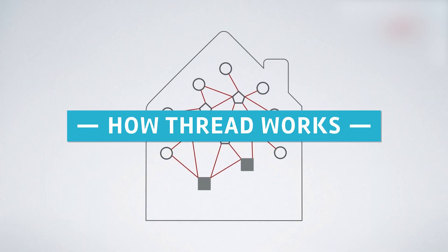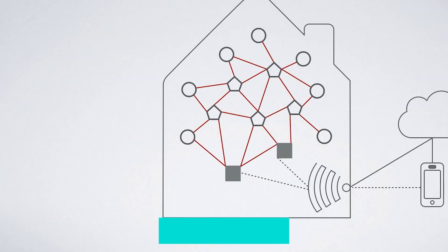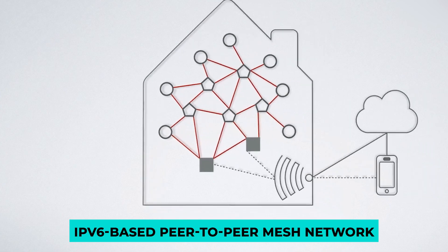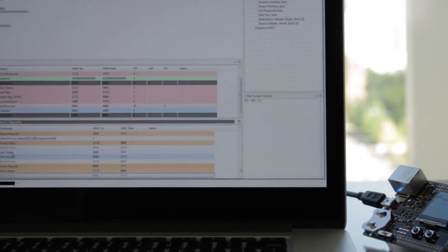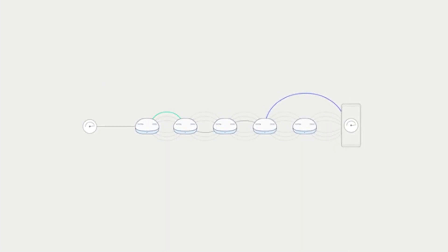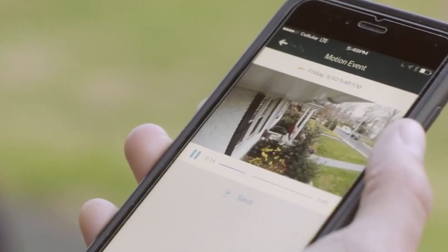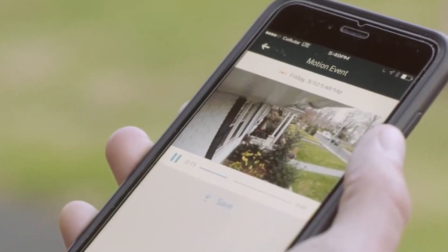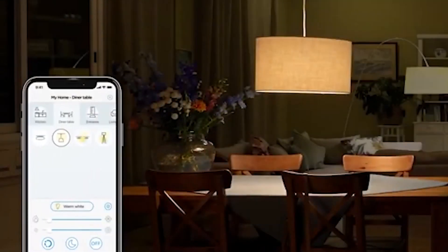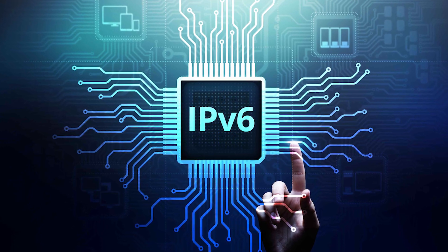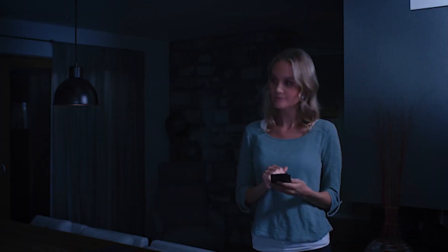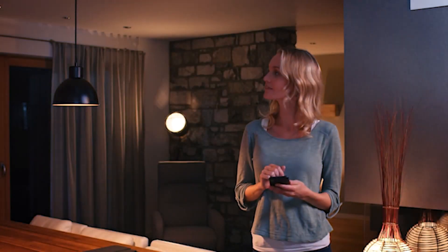Thread is an IPv6-based peer-to-peer mesh network that eliminates the need for devices to connect with one another through a central hub. Thread is currently in beta testing. When it comes to smart homes, it doesn't really matter because you still need a way to connect with the devices in your home. However, the IPv6 design is supposed to be better at both performance and reliability.